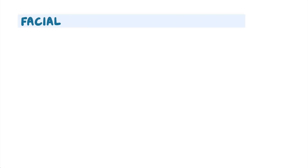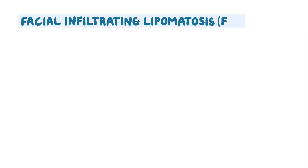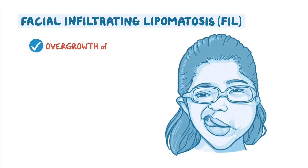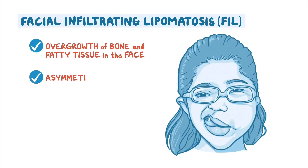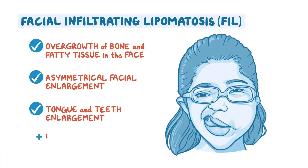Facial infiltrating lipomatosis, or FIL, leads to overgrowth of bone and fatty tissue in the face, causing asymmetrical facial enlargement, tongue and teeth enlargement, and rarely nerve tumors.